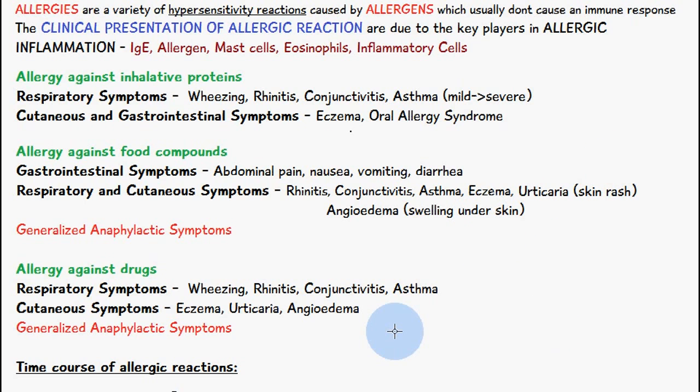conjunctivitis and asthma. The cutaneous symptoms again would be eczema, urticaria, and angioedema, and again you may have some generalized anaphylactic symptoms as well.